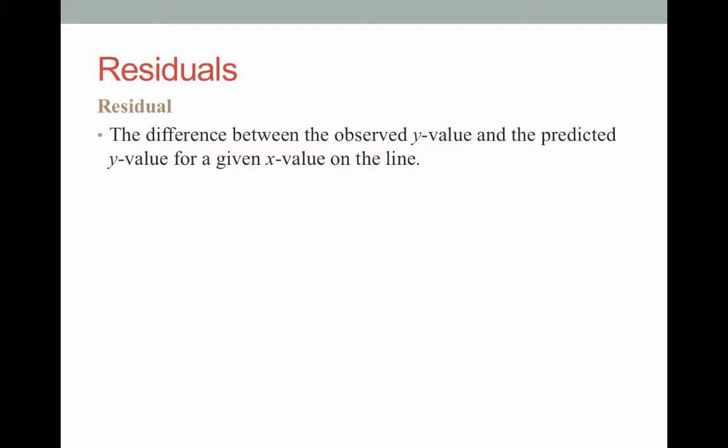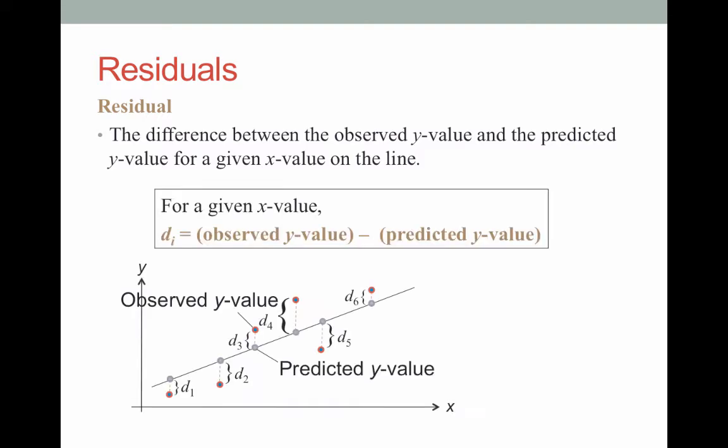For example, let's say that we have a regression line for Google stock price tomorrow, and our line predicts that the Google stock price tomorrow is $540. And tomorrow at the end of the day, when the stock market closes, the actual value ended up being $521. Then the difference between 521 and 540 is referred to as our residual. We're going to use the notation d sub i, which is the observed y value — what actually happens — minus the predicted y value, which comes from the regression line.